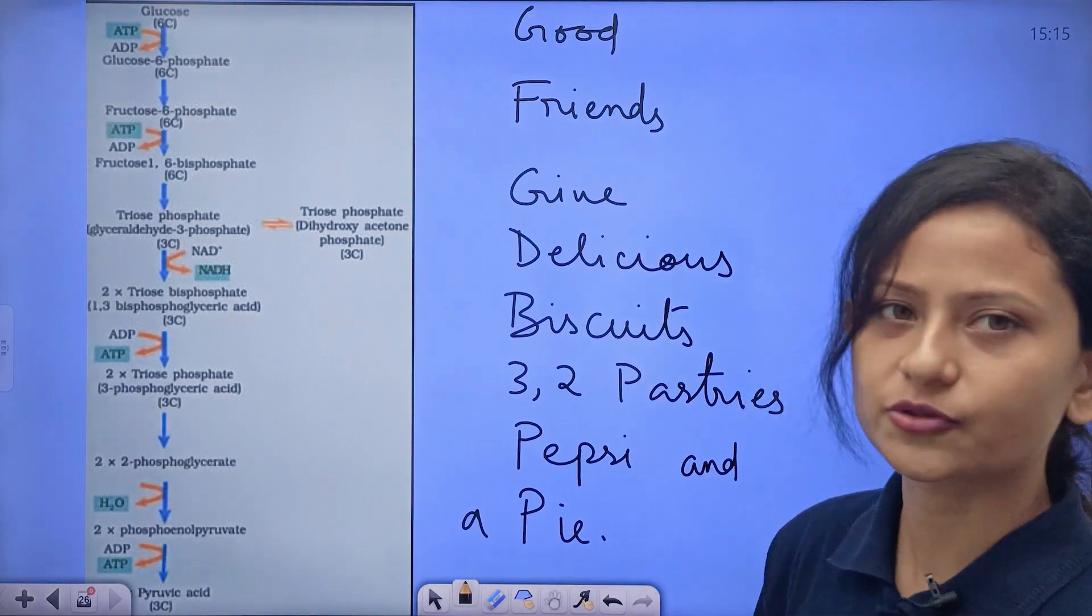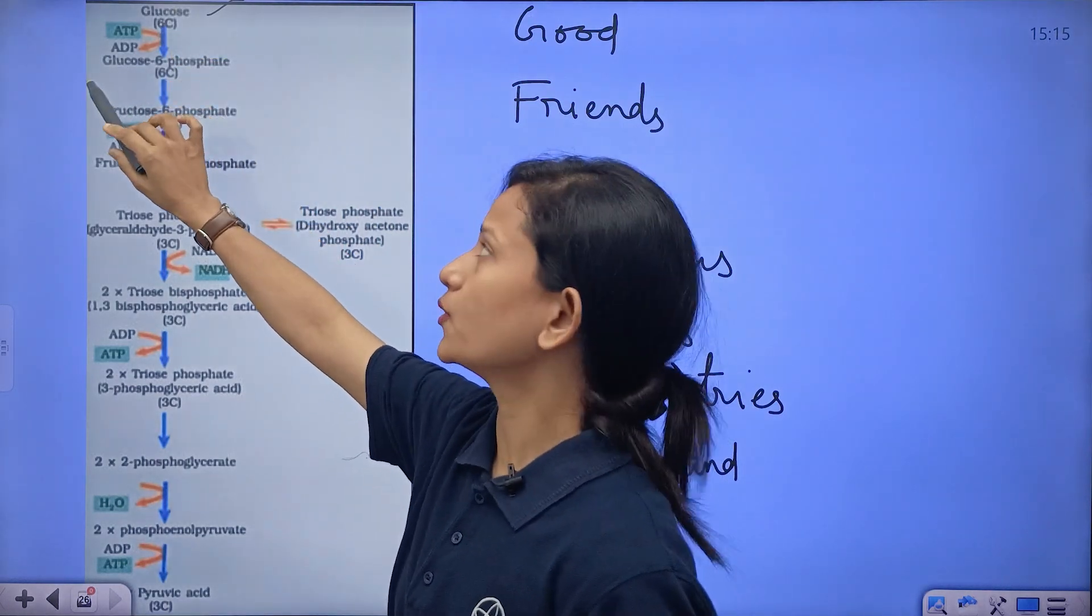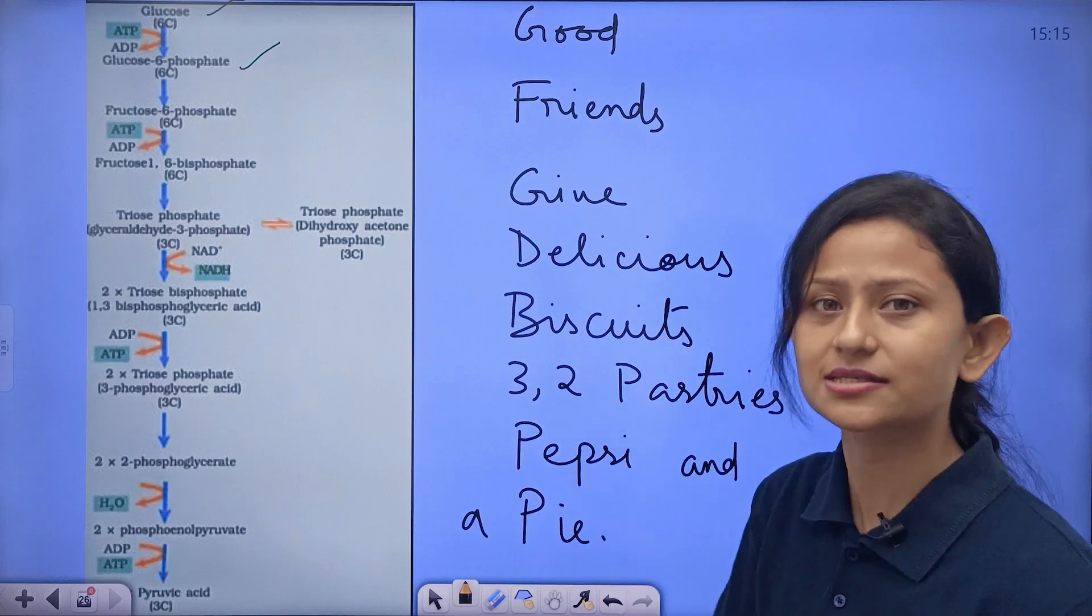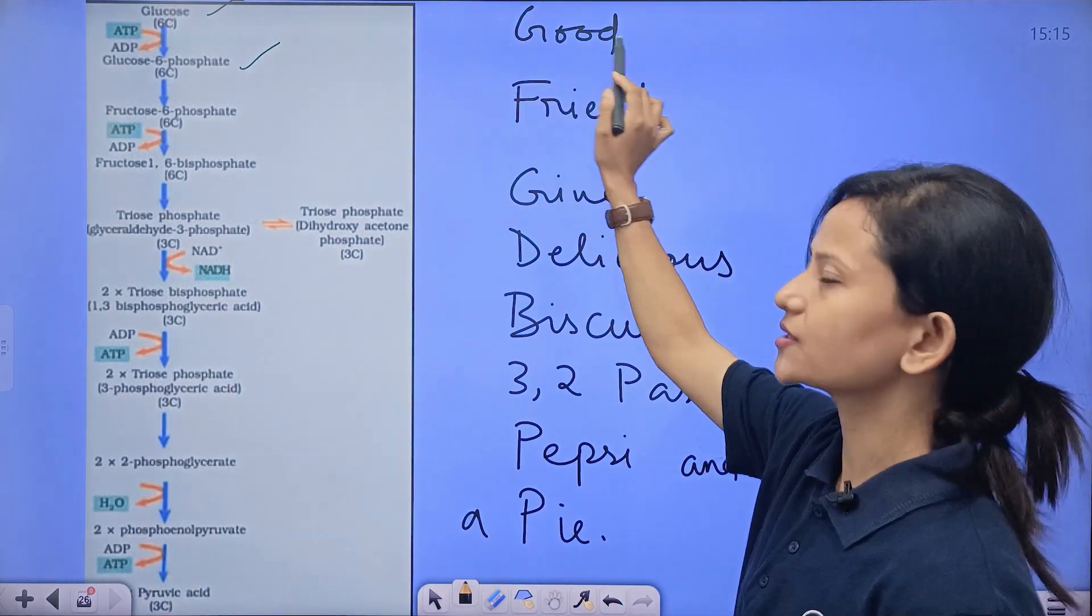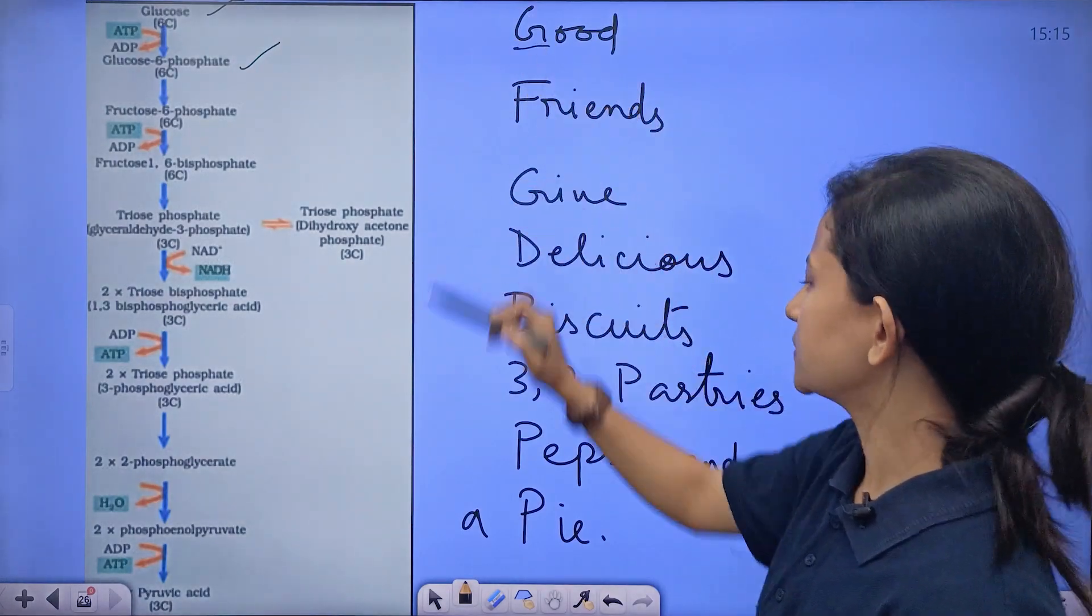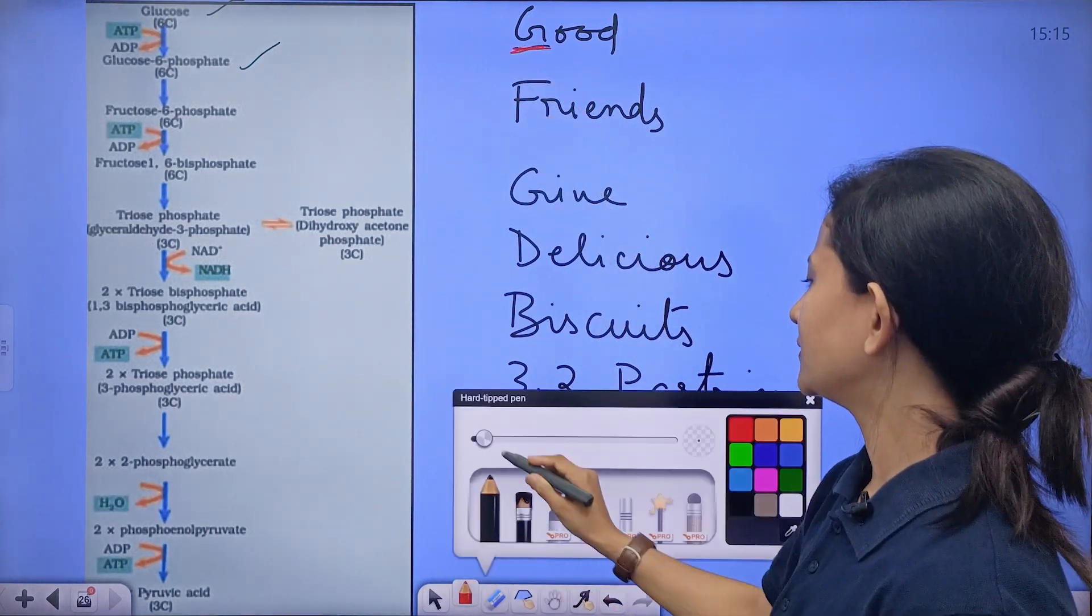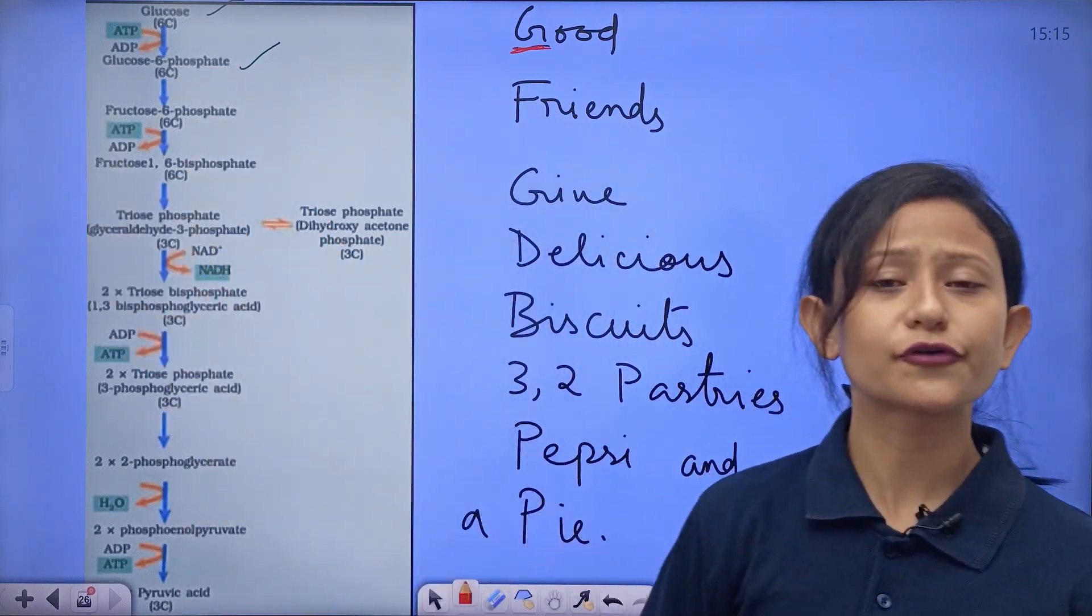So G for glucose. Glucose breaks down into glucose 6-phosphate, right? These are the two compounds, so that is good: G for glucose, G for good. Let me highlight with the red color. Then glucose 6-phosphate breaks down into fructose 6-phosphate.